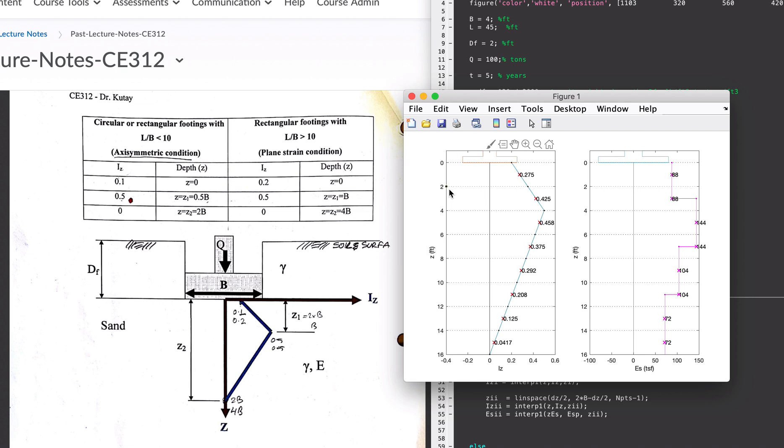In this case, 0.275 is for this layer, 0.425 is for this layer, and so on. You find the IZ at the center of each sublayer and you also plot the change in modulus with depth to find the mean modulus at the center of each layer like this.